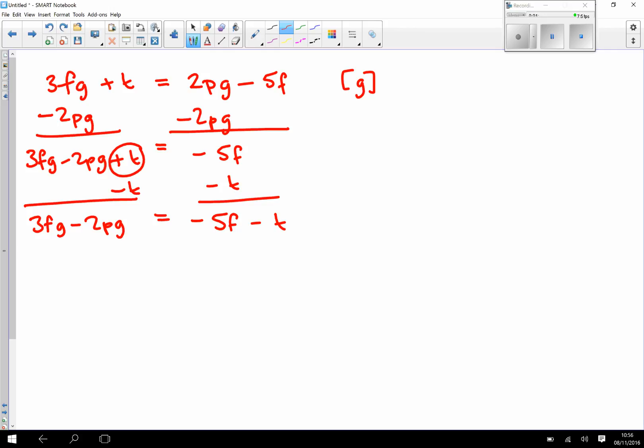Now I've got all of the parts of the equation which contain G in them on the left-hand side of the equation. So we need to factorise that. So we take G out as a common factor, factorise it.